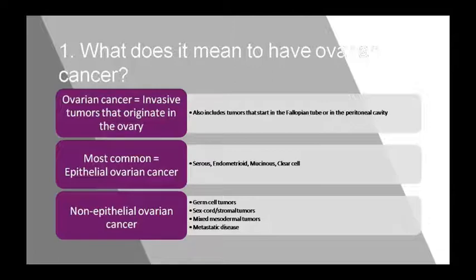Sex cord stromal tumors account for 5-10% of cases and occur across all ages. Subtypes include fibroma, granulosa, theca cell tumor, Sertoli, and Leydig cell tumor. Metastatic disease accounts for 5% of cases and also occurs across various ages.